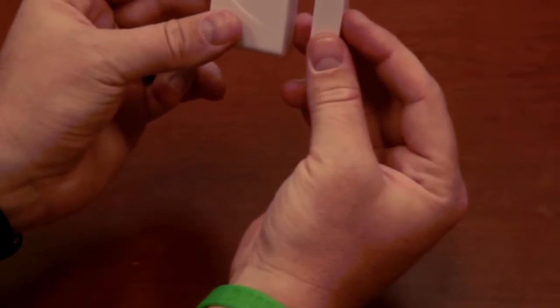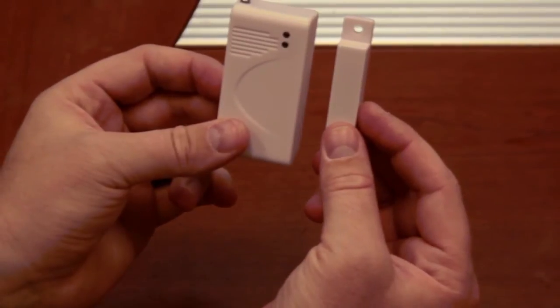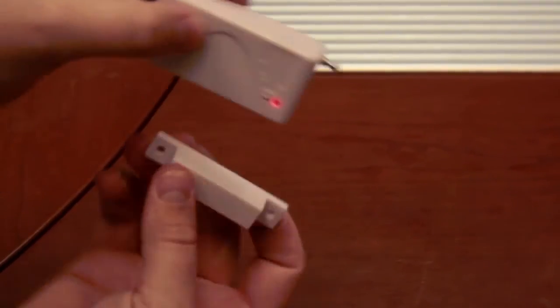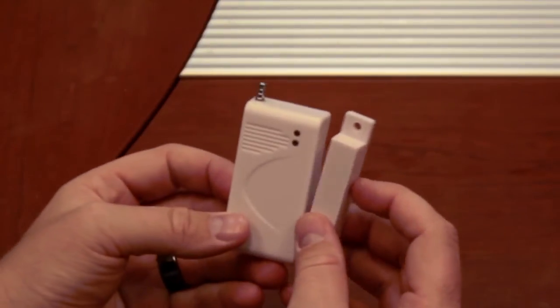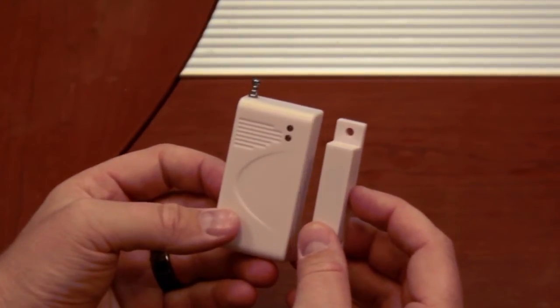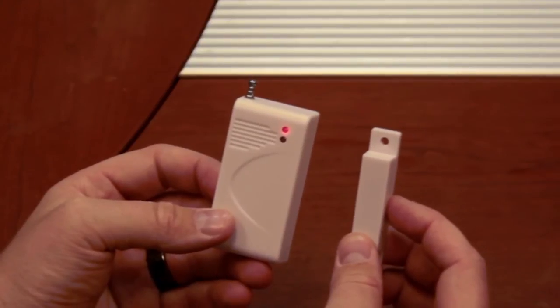It doesn't matter which way they go up on the door or window. You can have them vertical, horizontal, antenna downward. Again, just as long as that magnet is on the LED side, and as you see, once it gets about a half inch away, that red light will flash.